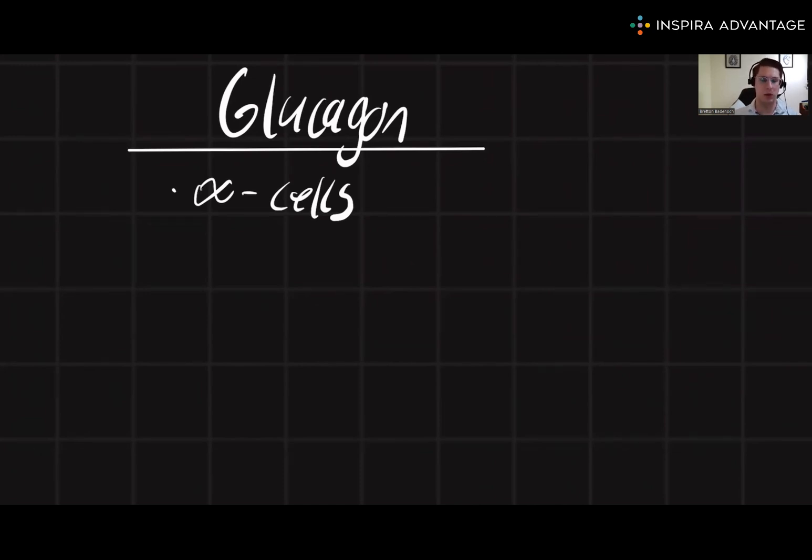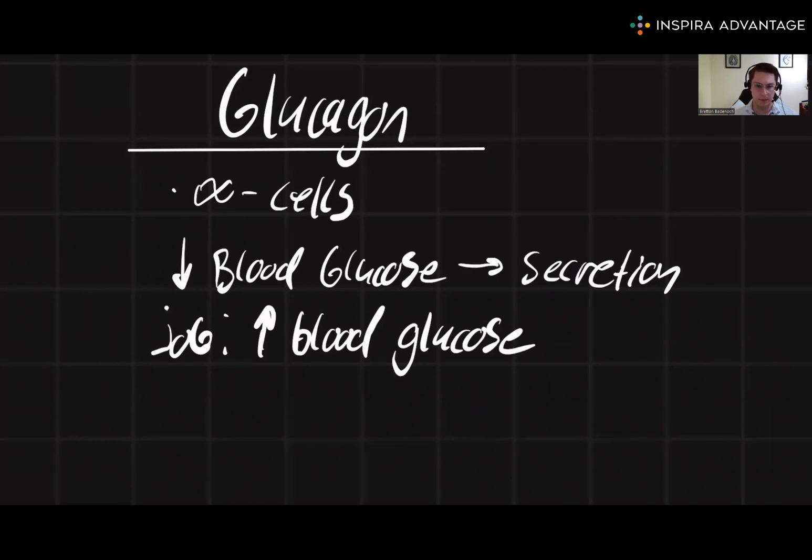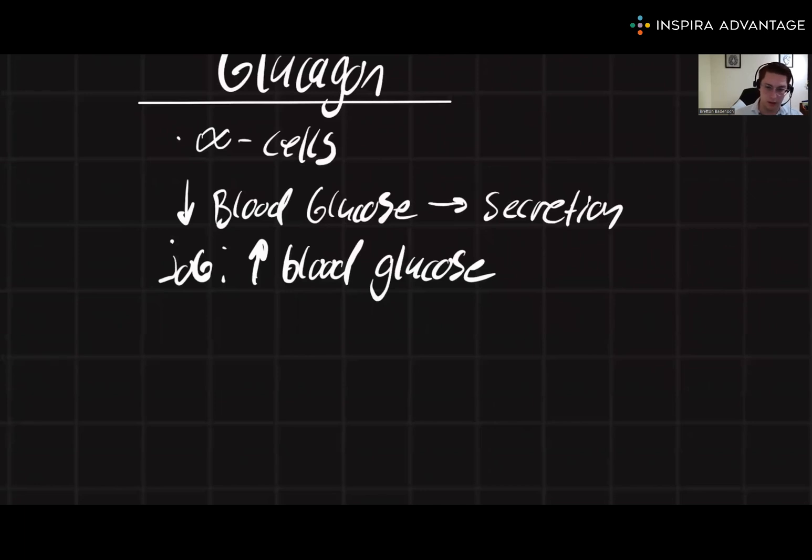We always want to have some amount of glucose in the bloodstream to use for energy. So the macro purpose of glucagon is going to be to increase the amount of blood glucose. It will do this by being the opposite of what insulin does, which means that glucagon is going to increase glycogenolysis and gluconeogenesis.